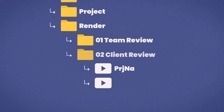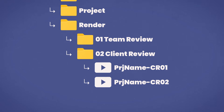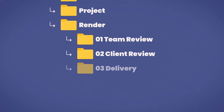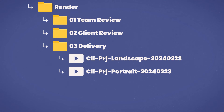Once you're happy with the team review, you're ready to move on to client review, which is where the files are stored for the client to see for the first time. These files will have the suffix dash cr01, which is client review followed by the version number. Then once you've been through those iterations and all is signed off, the final files are exported and saved to the delivery folder ready to send off.